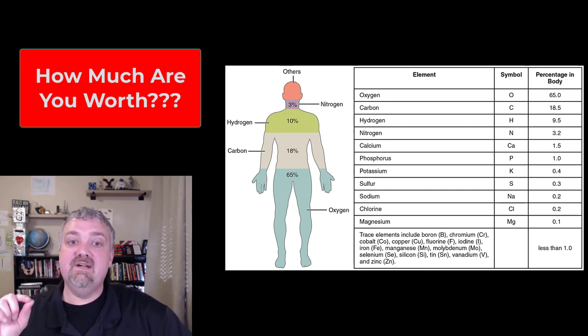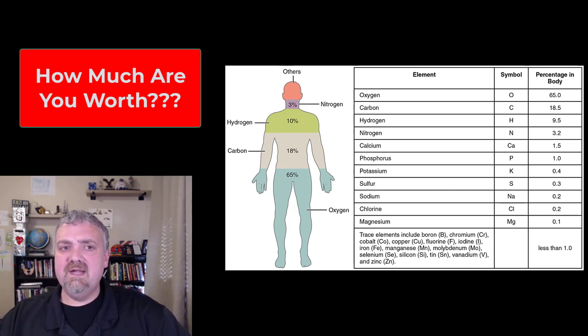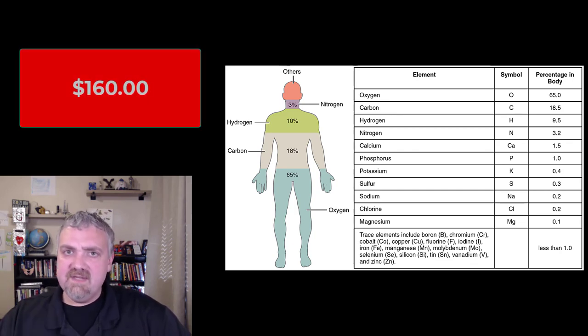If you put these raw materials together, what is their value? Now you're going to see different numbers, but I generally agree with this number here that for a 175 pound person, you're going to be worth about $160 worth of elements. That's an awfully low number if you think about it, but the most abundant elements in the body are actually very cheap. Think about hydrogen and oxygen, think about water.